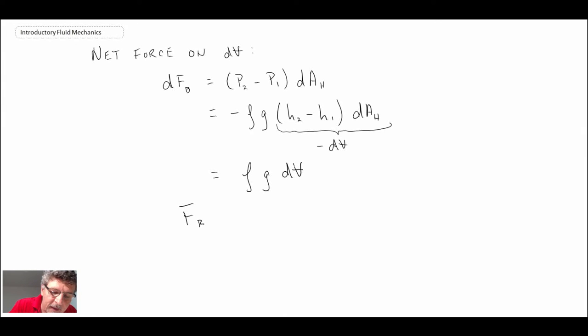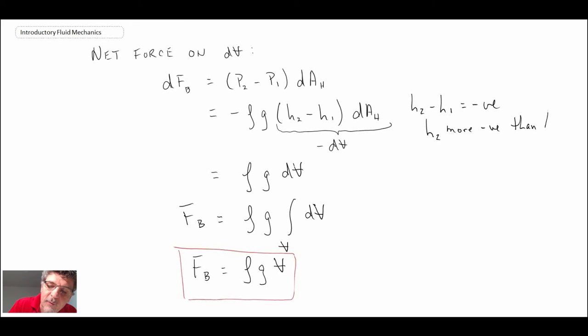And if we integrate that, we want to integrate that across that entire body. So what we end up with for the buoyancy force is rho G times the volume of the displaced body. And I'll put a little comment here, H2 minus H1 is negative because H2 is more negative than H1. So if you're wondering how I did that sign change, that was how it was done. And that was using the hydrostatic equation.